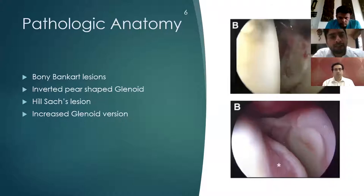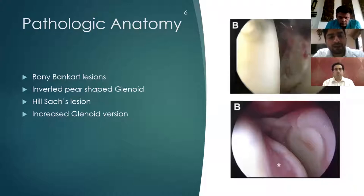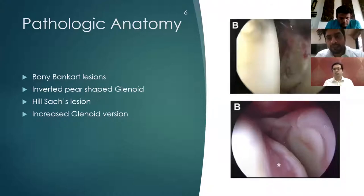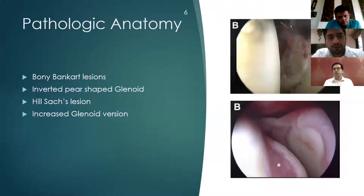Coming on to the pathological anatomy, there is the bony Bankart lesion, which is the antero-inferior bone loss of the glenoid, the inverted pear-shaped glenoid, the Hill-Sachs lesion, which is the posterolateral defect on the humerus, and increased glenoid version. All these pathological factors lead to instability in the shoulder.